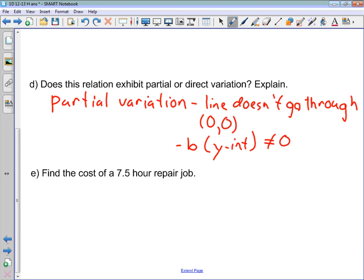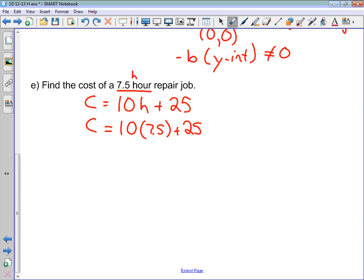Find the cost of a seven and a half hour repair job. This is pretty straightforward. We're just going to use our equation. Our equation was that our cost was 10h plus 25. What they're giving us here is a value for h, so let's just sub that into our equation. 7.5 plus 25. And let's evaluate using order of operations. 10 times 7.5 is 75, plus 25, gives us 100. So the cost is going to be $100. And we're done.